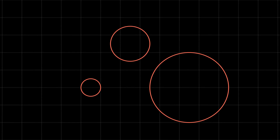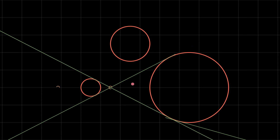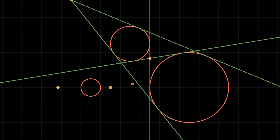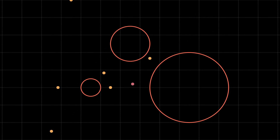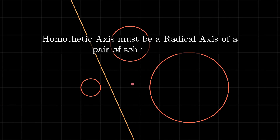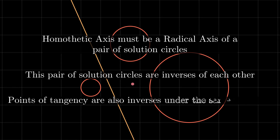It is now time to attack the main problem. Given a configuration of three circles, we first construct the radical center, then construct the four homothetic axes of the given circles. Let's take one homothetic axis to demonstrate Gigan's solution. Based on our discussion, we know this homothetic axis must be the radical axis of a pair of circles tangent to all three given circles, and those two circles are inverses of each other under an inversion centered at the radical center.